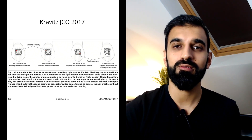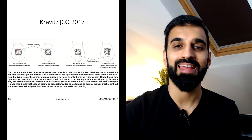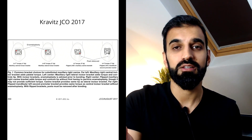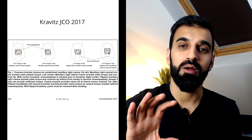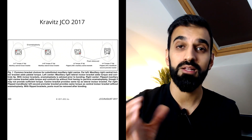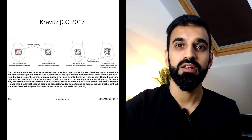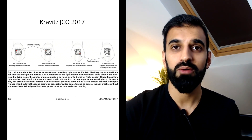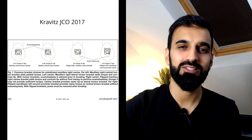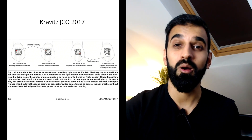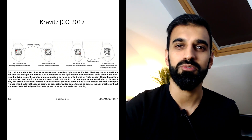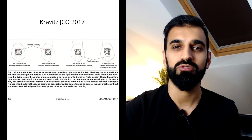Option three is to use a canine bracket but inverted — we flip it and go from a minus 7 degree torque to a plus 7 degree torque. The advantage is that no plasty is required, but we have less torque than our other options, so we're likely to need to add some power to root torque during treatment.